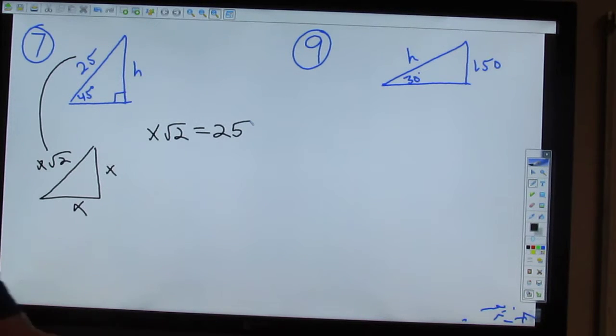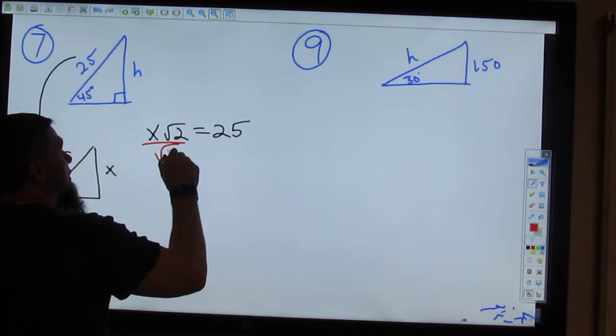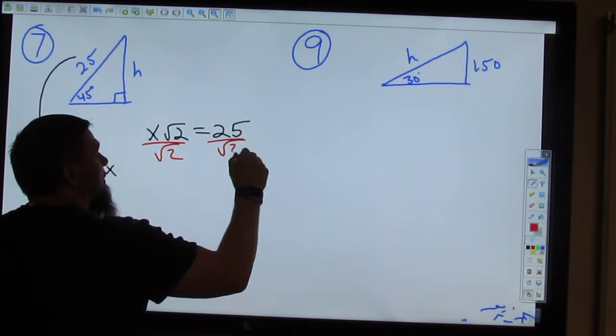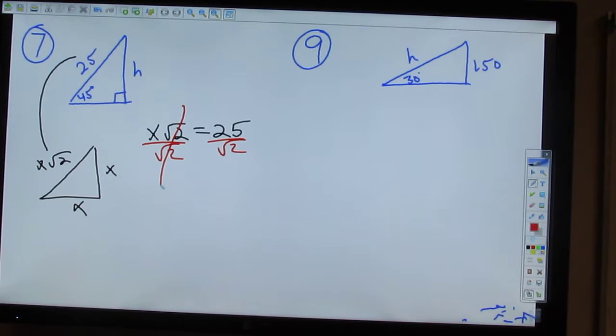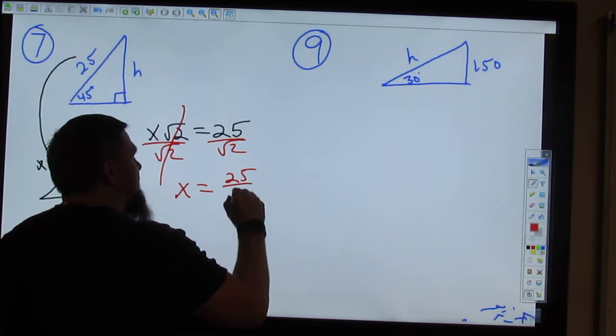X times square root 2 is equal to 25. So, how do I figure it out? Divide it. By square root of 2. Okay? Because your whole point is to get X alone, right? So, X equals 25 divided by the square root of 2.